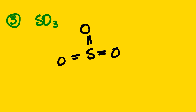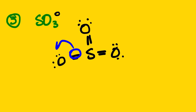Now we look at the resonance structure of SO3. We have S which forms double bonds with oxygen. You can see the formal charge is zero here. Remember that sulfur is one of those exceptional elements when it comes to the octet rule.